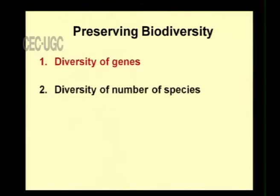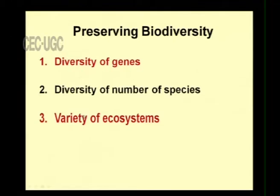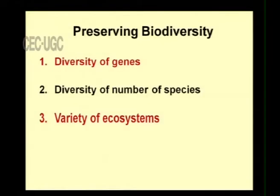The second aspect is diversity of number of species — for example, in the animal kingdom, dogs, cats, and rats are all different species, and that diversity should be preserved. The third is the variety of ecosystems: in a particular area there are many ecosystems — forest, marine, soil — and this also contributes to biodiversity. If more ecosystems prevail in a place, more species can survive there. All three factors must be preserved for forest conservation.